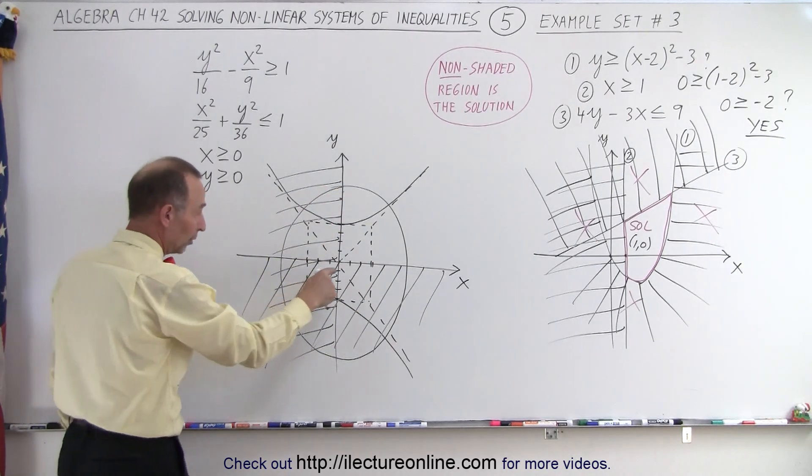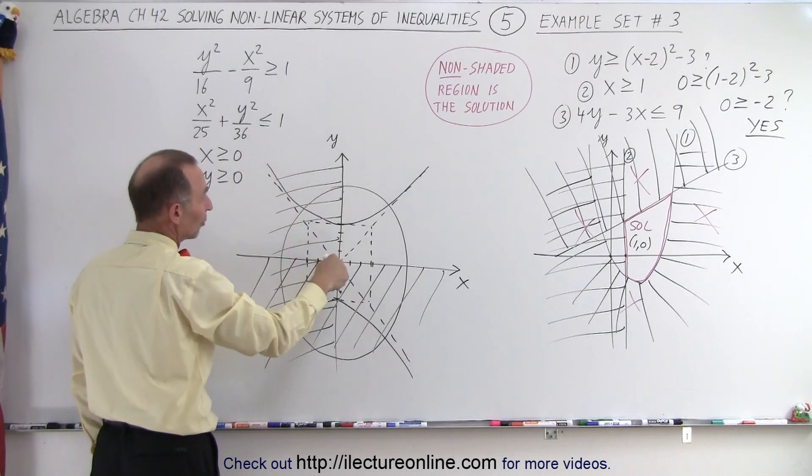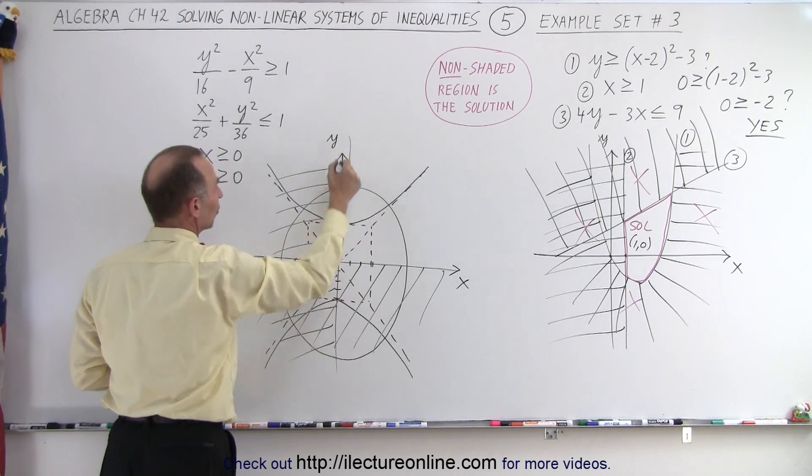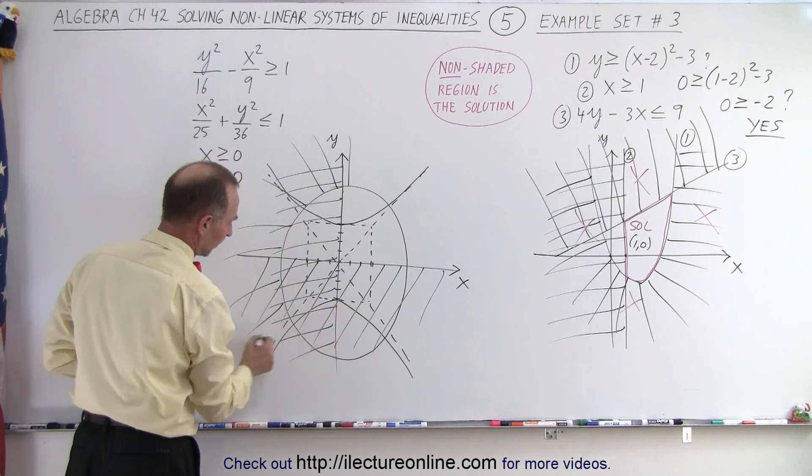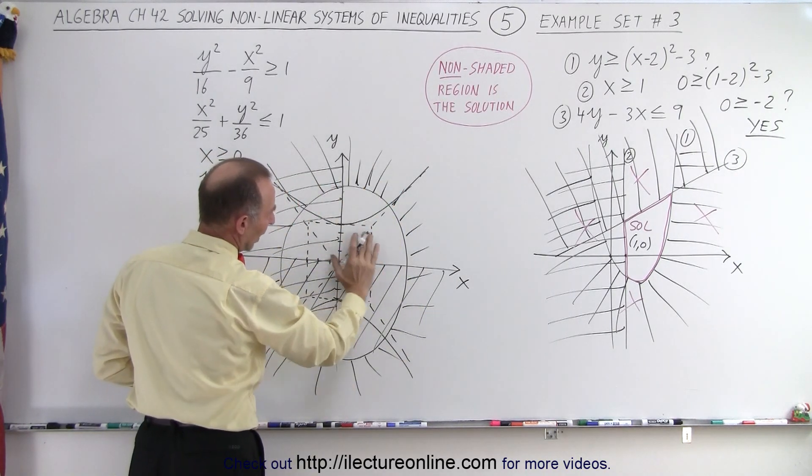If you're not sure, just pick a point, zero, zero. Zero plus zero, is that less than one? The answer is yes. So that's part of the solution. Outside the ellipse is not part of the solution. So we can get rid of everything outside the ellipse. So now all we have left is right in here.